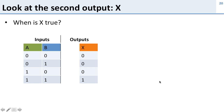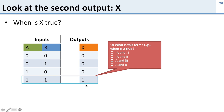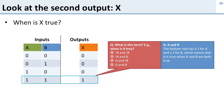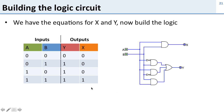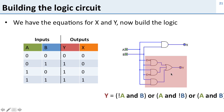Now how about the second output x? X only has one term where it's true — this one down here. X is true when a and b are both true, so this term is simply a AND b. We can now write out the equation: here's the complicated term we had for y, and here's the single term a AND b for x. So we've gone from the truth table to a logic circuit.